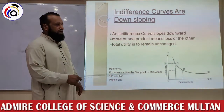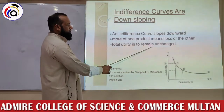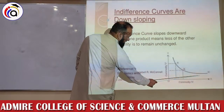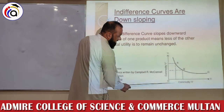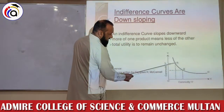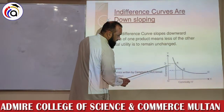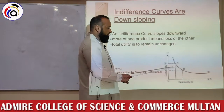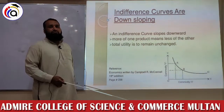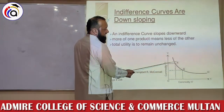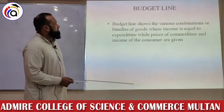Indifference curves are downward sloping. More of one product means less of the other, so that total utility remains unchanged. In the diagram, there are two points A and B on the indifference curve — commodity Y on one axis and commodity X on the other. At point A, the consumer has more units of Y and fewer of X. As he takes one extra unit of X, he gives up some units of Y — moving from A to B — but the same indifference curve gives the same level of satisfaction whether he selects A or B.